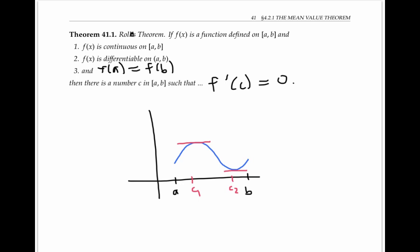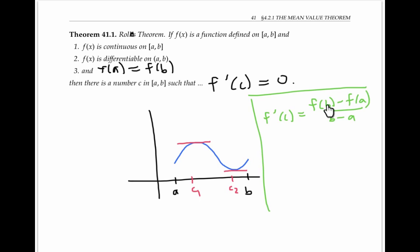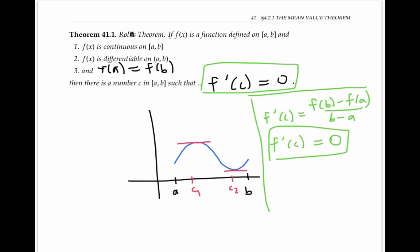To see why Rolle's theorem is a special case of the mean value theorem, think about what the mean value theorem would say about this function. It would say there is a C such that F'(C) is equal to the average rate of change of the function. But since F(b) and F(a) are the same by our assumption, this average rate of change is just zero. And so the mean value theorem conclusion is that there's a C such that F'(C) equals zero, which is exactly the conclusion of Rolle's theorem.